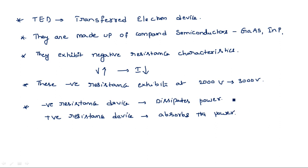Negative resistance characteristic devices can be used as sourcing devices because they are releasing energy into the next circuits — they can deliver power. Whereas positive resistance characteristic devices absorb power, so they cannot generate power; they can only utilize power given by other devices. That is the main advantage of negative resistance characteristic devices.